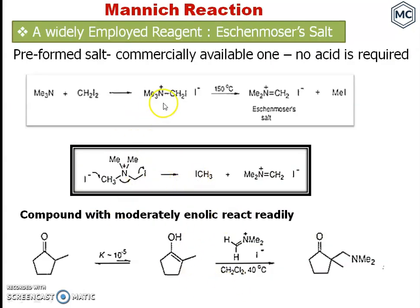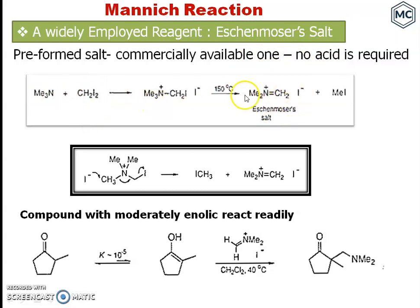A widely employed pre-formed salt which is commercially available is called Eschenmoser's salt. This salt is commercially available and can be prepared as shown. The mechanism of this preparation involves first a nucleophilic substitution, then elimination, to form the iminium salt. In this case, no acid is required for the formation of this iminium salt.